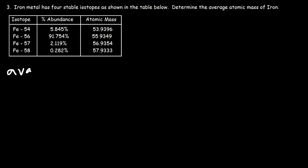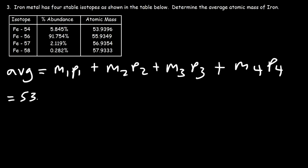So to calculate the average, we need to use this formula. We have four stable isotopes, so we need to go up to M₄P₄. Now the mass of the first isotope is 53.9396, and then we're going to multiply it by the percentage that corresponds to it. Don't forget to divide that number by 100, so that's going to be 0.05845.